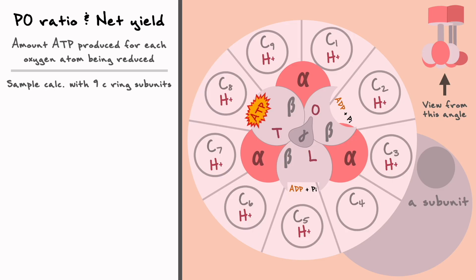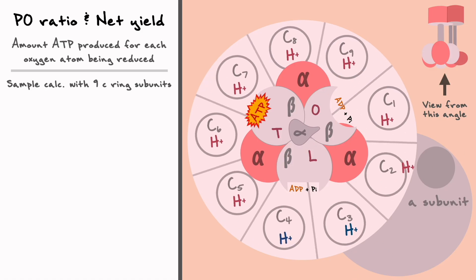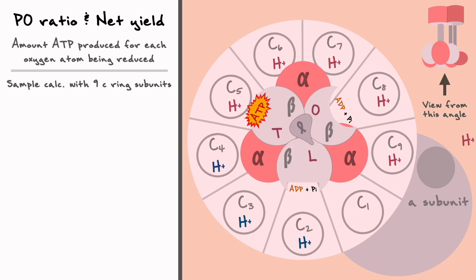Finally, to keep track of the full rotation, the new protons that will come into the ring will be blue. So, as you might expect, for the subunit to change conformations, the gamma subunit has to rotate a third of the ring to reach the next subunit. This movement will cost 3 protons and will change all subunits simultaneously. The open conformation will become loose, the loose conformation will become tight and synthesize ATP, and finally the tight conformation will become open, which will release ATP and bring a new ADP plus phosphate.